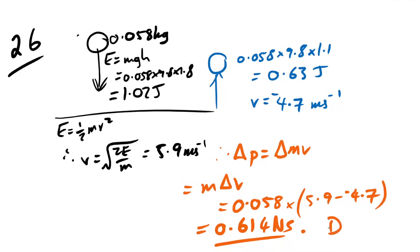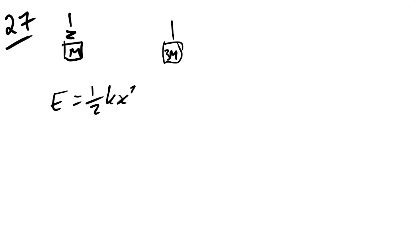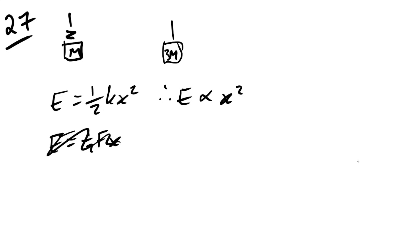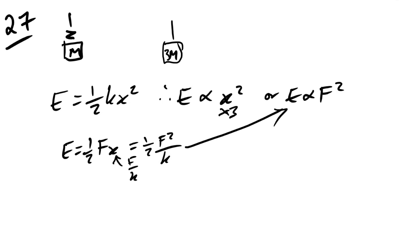Question 27: a spring with mass m is replaced by mass 3m. Elastic potential energy E = ½kx². Since force triples, extension triples, and E ∝ x², energy multiplies by 9. The answer is D.